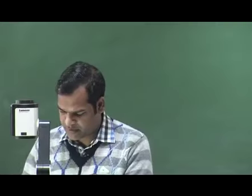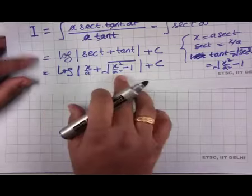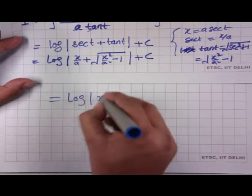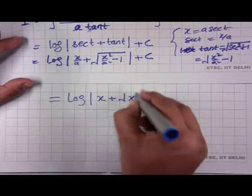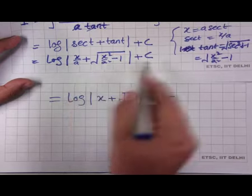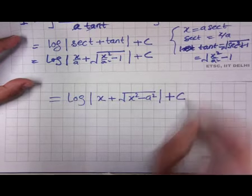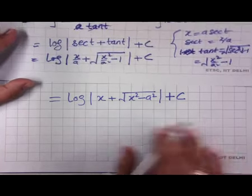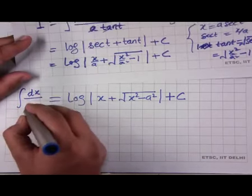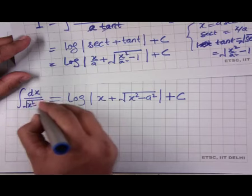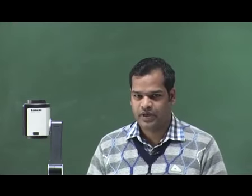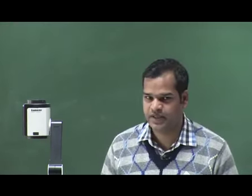Taking −log|a| together with the constant C and renaming it as a new constant C, the formula is: ∫dx/√(x²−a²) = log|x+√(x²−a²)| + C. We will now take up certain specific integrals.